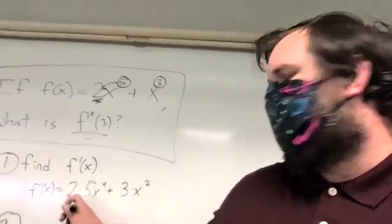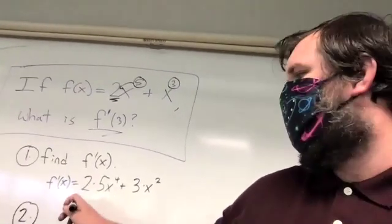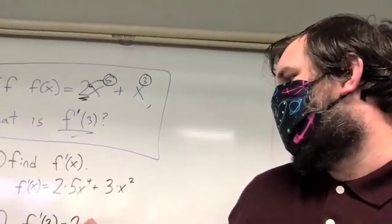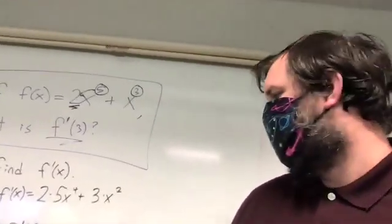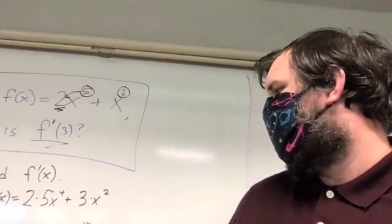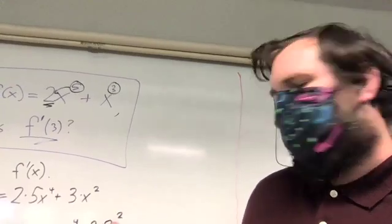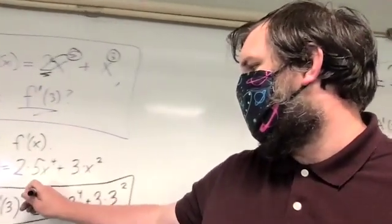Second step, now that we have a formula that lets us find f prime of anything, is we actually plug in the specific x value we're interested in. Two times five times three to the fourth plus three times three squared. Plugging in the three for the f prime that we found.